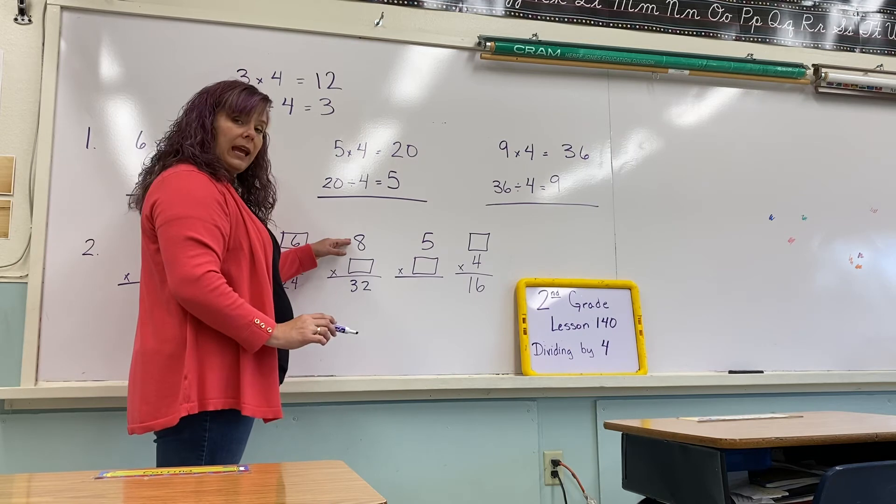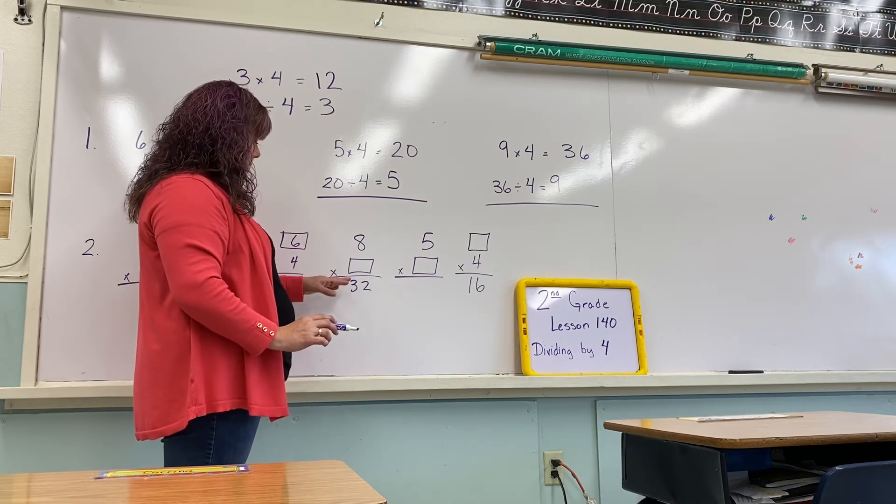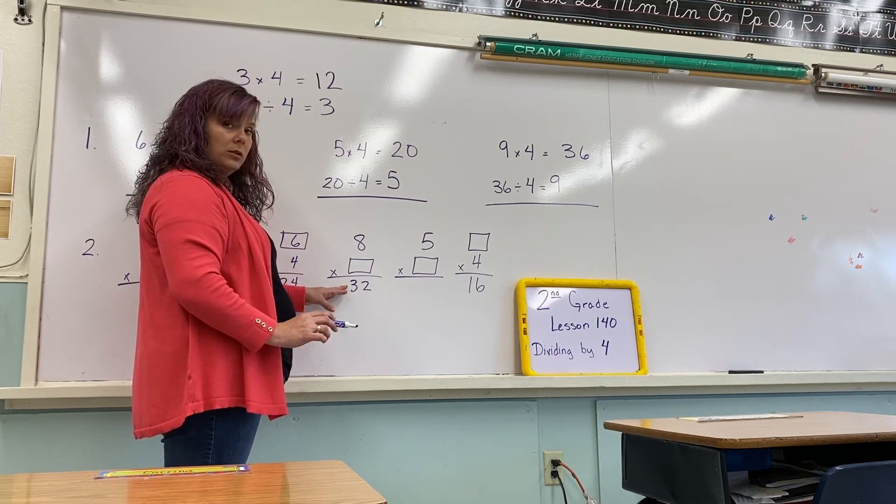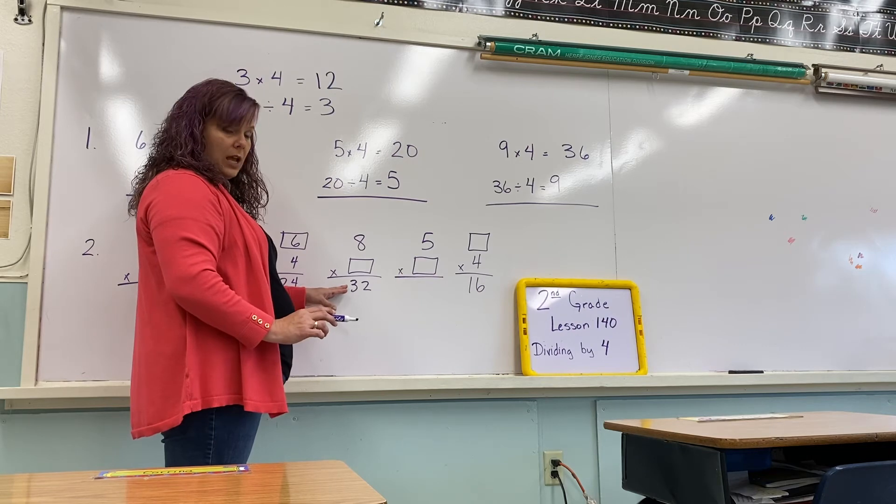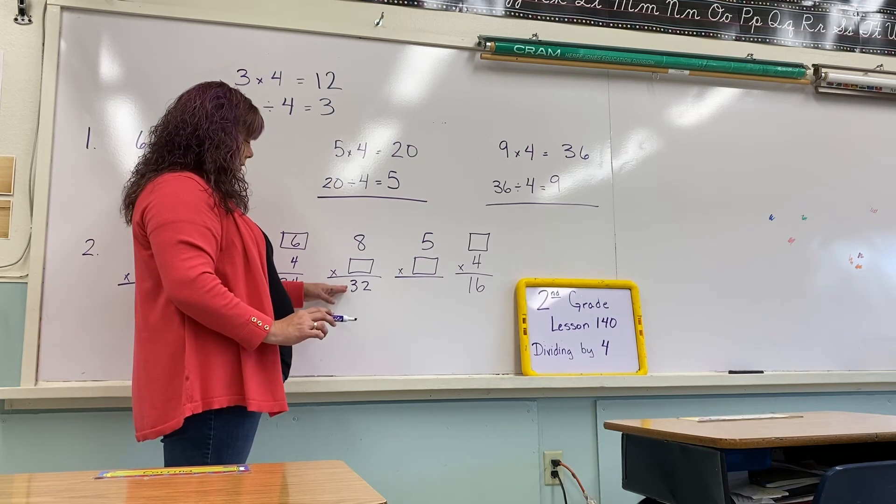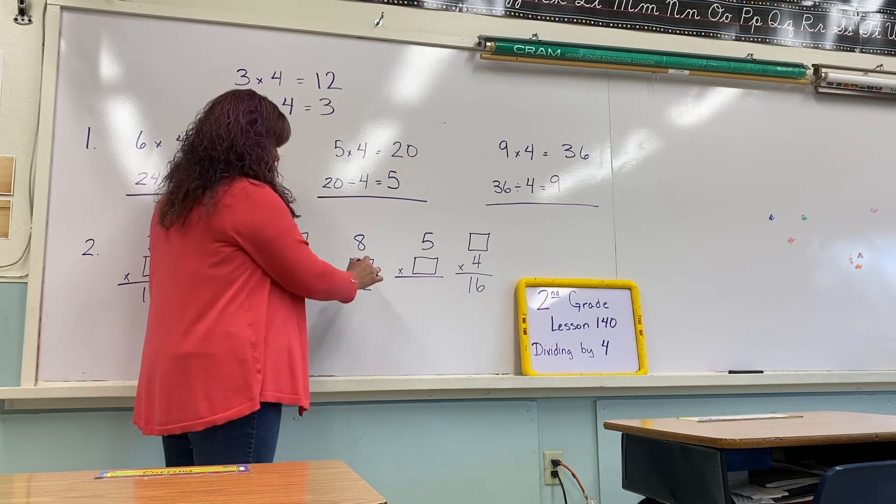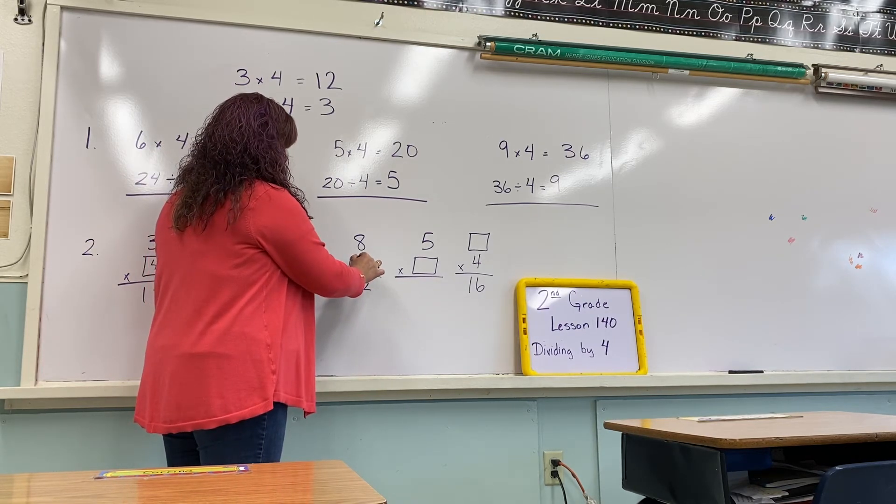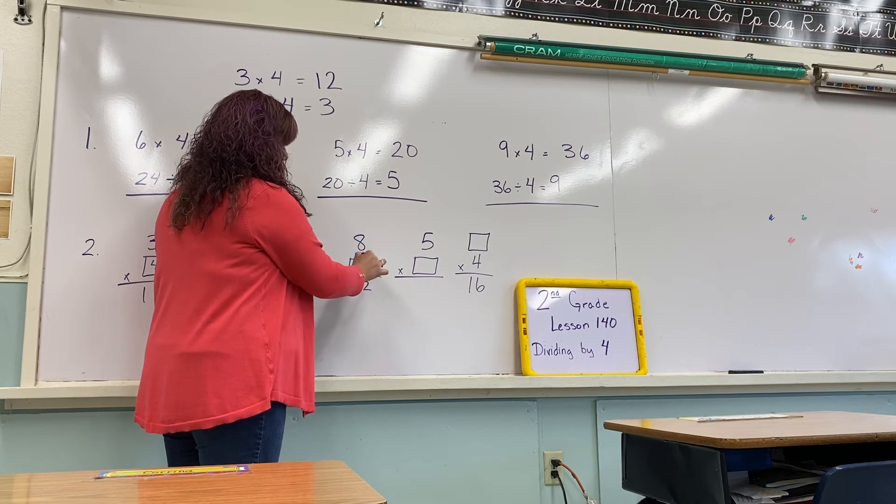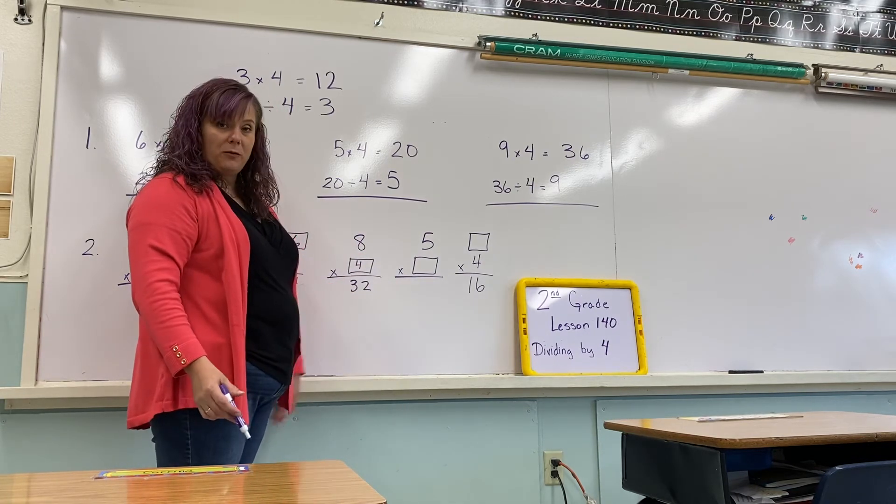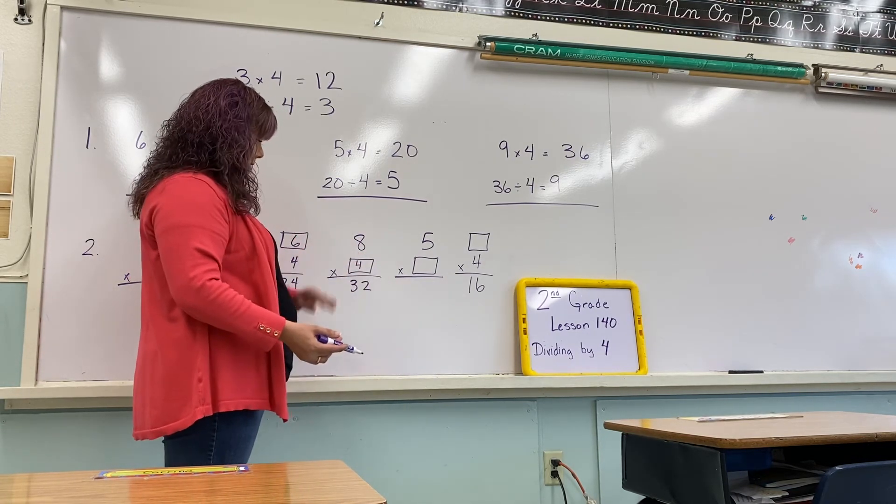Here we have 8 times what number equals 32. We could also say 32 divided by 8 equals what number? 4. This one's trickier, but it's still 4. We're dividing by 4s this lesson, so the answer is 4.